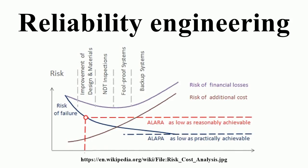Reliability engineering relates closely to safety engineering and system safety, in that they use common methods for their analysis and may require input from each other. Reliability engineering focuses on cost of failure caused by system downtime, cost of spares, repair equipment, personnel, and cost of warranty claims. Safety engineering normally emphasizes not cost but preserving life and nature, and therefore deals only with particular dangerous system failure modes. Higher reliability levels also result from good engineering and attention to detail, and almost never from only reactive failure management.